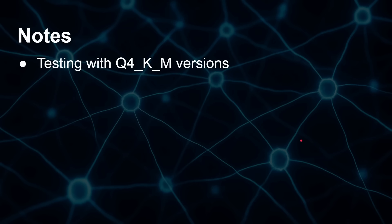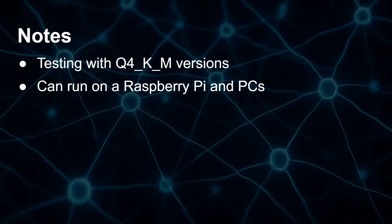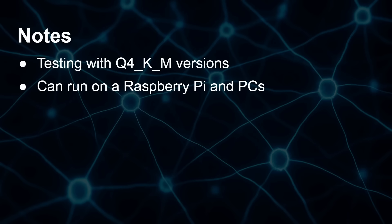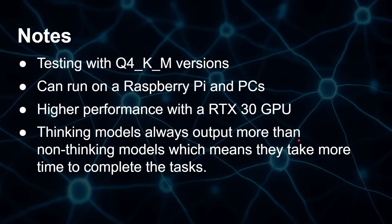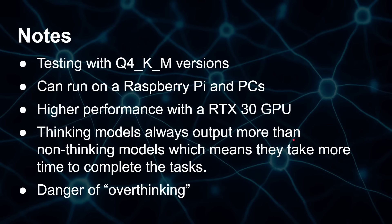We're testing the 4-bit quantized versions, which can run on a Raspberry Pi and on PCs, with more performance on an RTX 30 or greater GPU. Thinking models always output more than non-thinking models because they output the chain of thought. Even if the final answer is just a sentence or two, there are many more tokens generated during thinking, and all that token output takes time. There's also a danger with these thinking models — they can overthink.